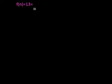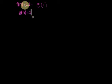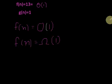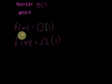We know that f(n) equals thirteen, which is Θ(1). It means we have found a function g(n) equals one which is acting as both an upper bound and a lower bound for this function — that is, f(n) is O(1) as well as f(n) is Ω(1). So g(n) = 1 is acting both as an upper bound and a lower bound for the function.